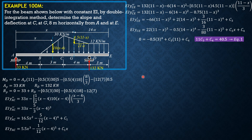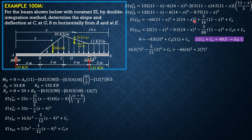There are no more direct boundary conditions, but point C is common to both differential equations. The slope at C when X equals 7 must match for both: EI Y' AC at X=7 equals EI Y' CE at X=7. Substituting: 16.5(49) minus (5/12)(3)⁴ plus C₁ equals negative 66(4)² plus 2(7)³ plus (3/16)(4)⁴ plus C₃. This gives C₁ minus C₃ equals negative 1096.75. Call that equation 2.